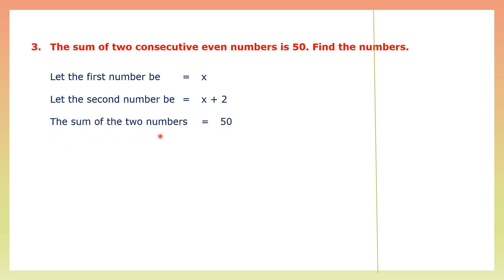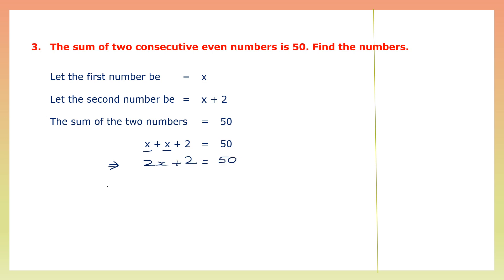The sum of the two numbers is 50, so x plus x plus 2 equals 50. We have x and x, that is 2x, so 2x plus 2 equals 50. To find the value of 2x, we leave 2x here and write 50, then carry plus 2 to the right hand side where it becomes minus 2. So 2x equals 50 minus 2, which is 48.